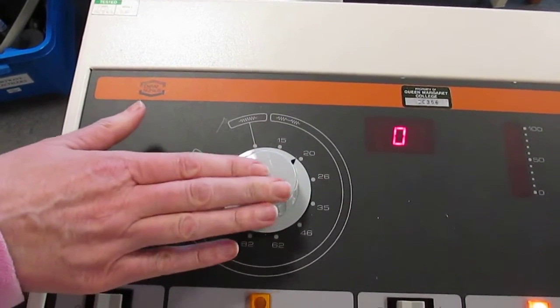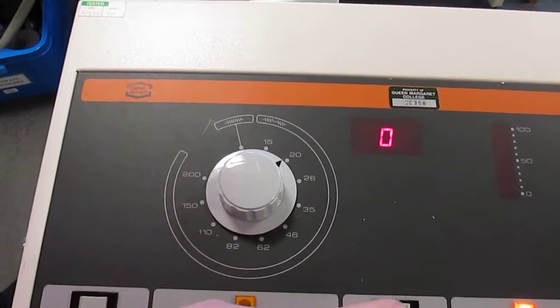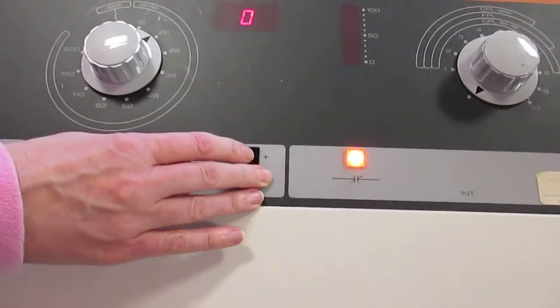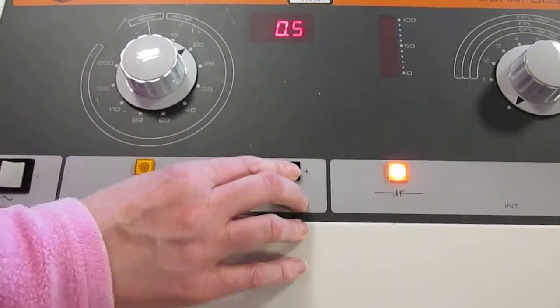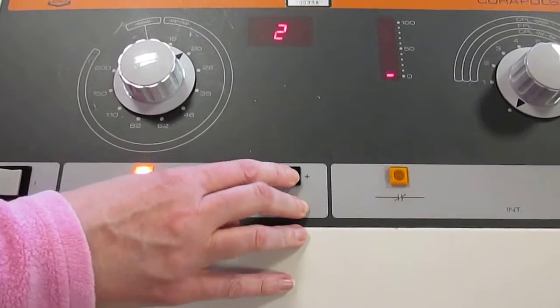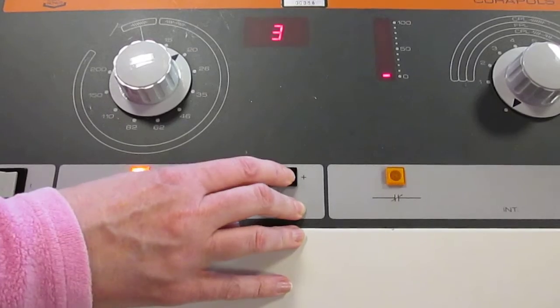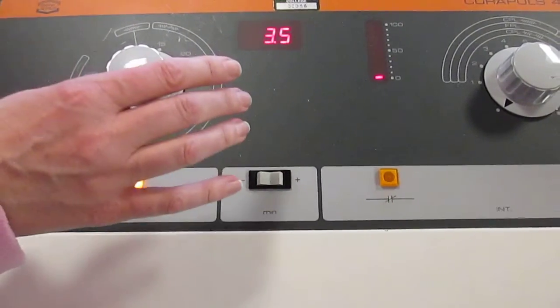Once you've chosen your pulse repetition rate, you're then going to set the time that you want to treat your lesion for. You push the plus button to add, and it adds 30 seconds at a time.